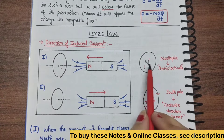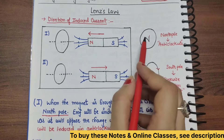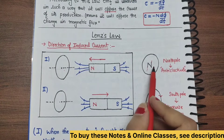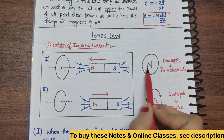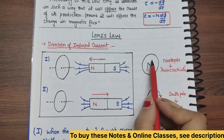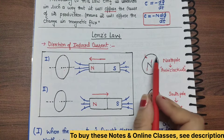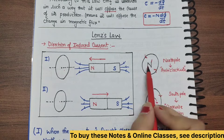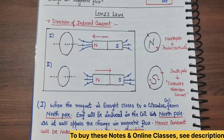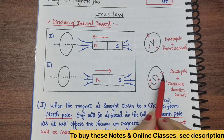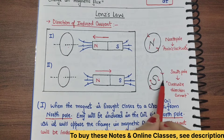Before proceeding, you should know that when the north pole of any magnet faces a coil, the current direction in that face is anticlockwise — meaning that face of the coil acts as a north pole. And when the face acts as a south pole, the current flows in the clockwise direction.